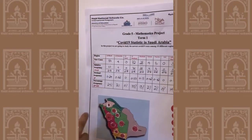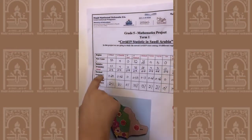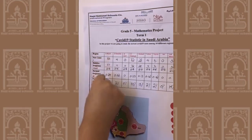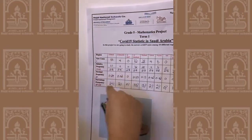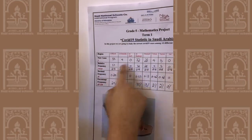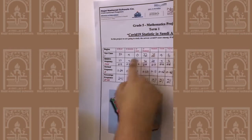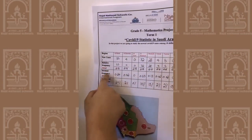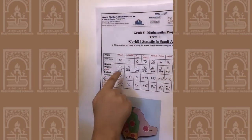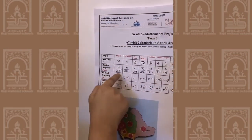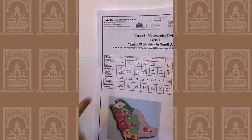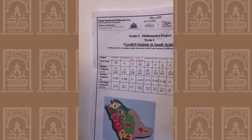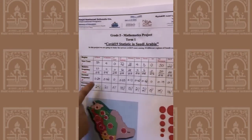The relative frequency is that you must take the cases of the region, then you must have the total of all the cases and put it under it. Then you divide it — like 53 divided by 218 equals 0.24.